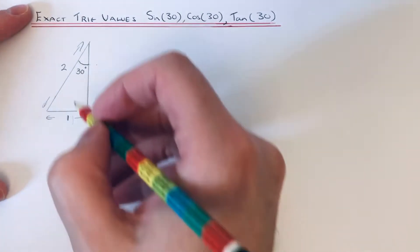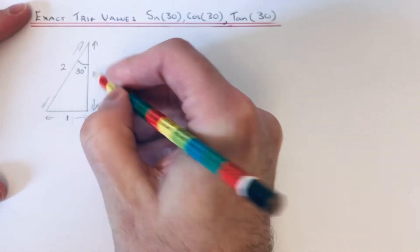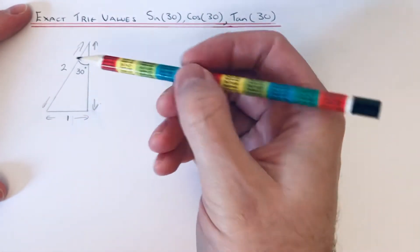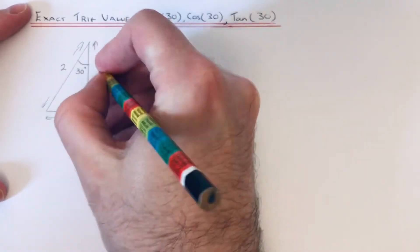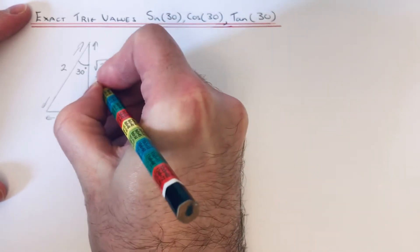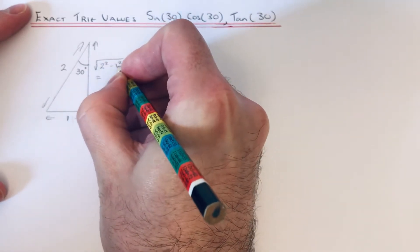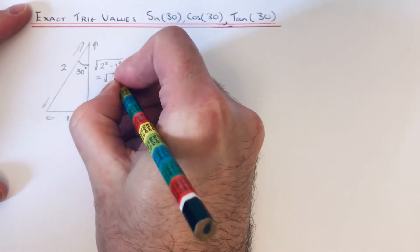Let's just work out the length of this side. You can do this by doing Pythagoras, so it'll be two squared minus one squared, square rooted. Two squared is four minus one squared is three, so it's root three.